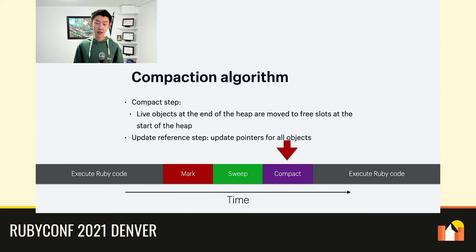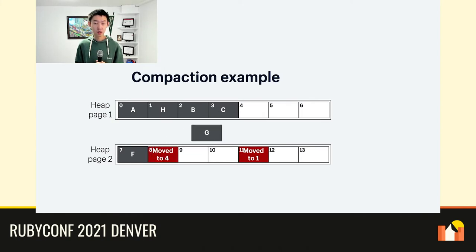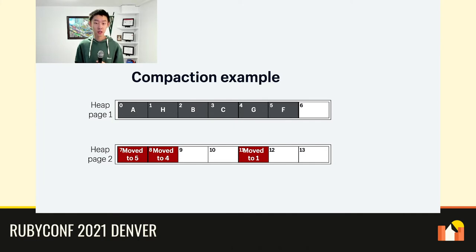The compact step moves objects from the end of the heap to the start of the heap. When this step completes, we do the reference updating step, where we scan all the objects and update the pointers that have moved. In our example, the last live object is object H and the first empty slot is slot 1. So we move object H to slot 1 and leave a forwarding address. This forwarding address tells us where the object was moved to, and we use it in the reference updating step. We then move object G to slot 4 and object F to slot 5, each leaving a forwarding address. The compact step is now done.